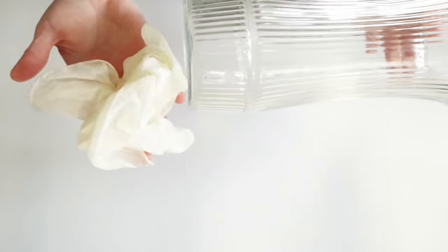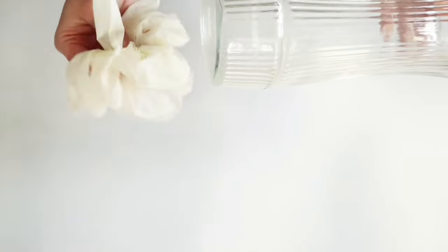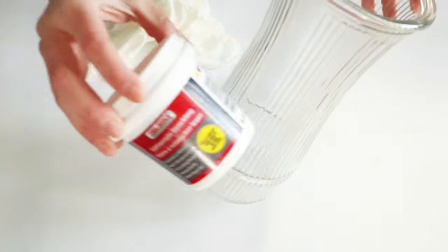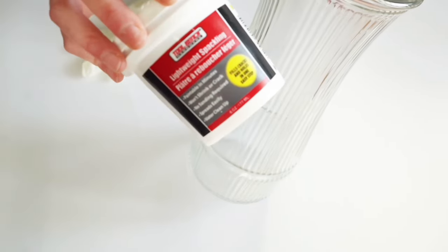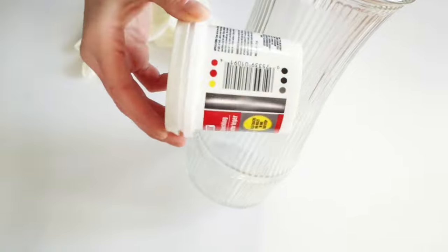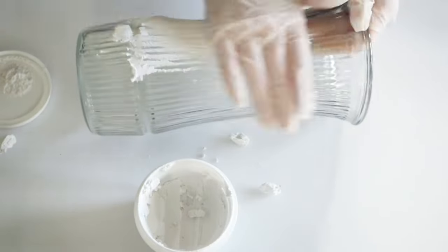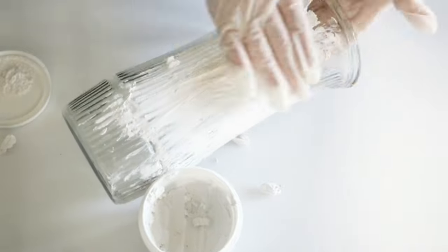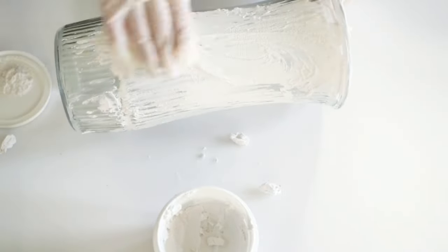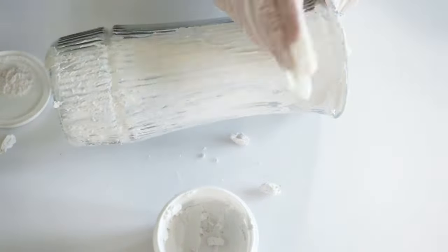This project was one that I did last year. It was actually my first spackling project that I ever did. And of course, we're using that Dollar Tree spackling. And I'm just going to use some rubber gloves, and I'm going to spread this spackling all over this glass vase. Now, this is just a vase that I had. You can use one of the Dollar Tree vases or even a Dollar Tree planter.